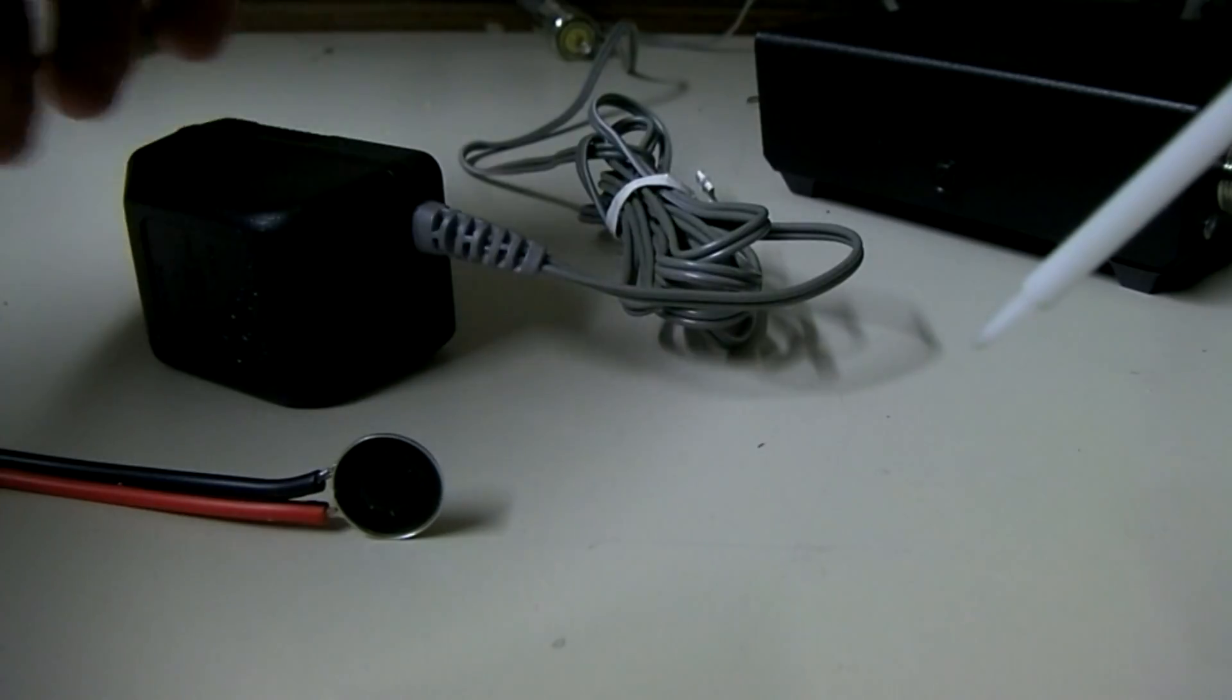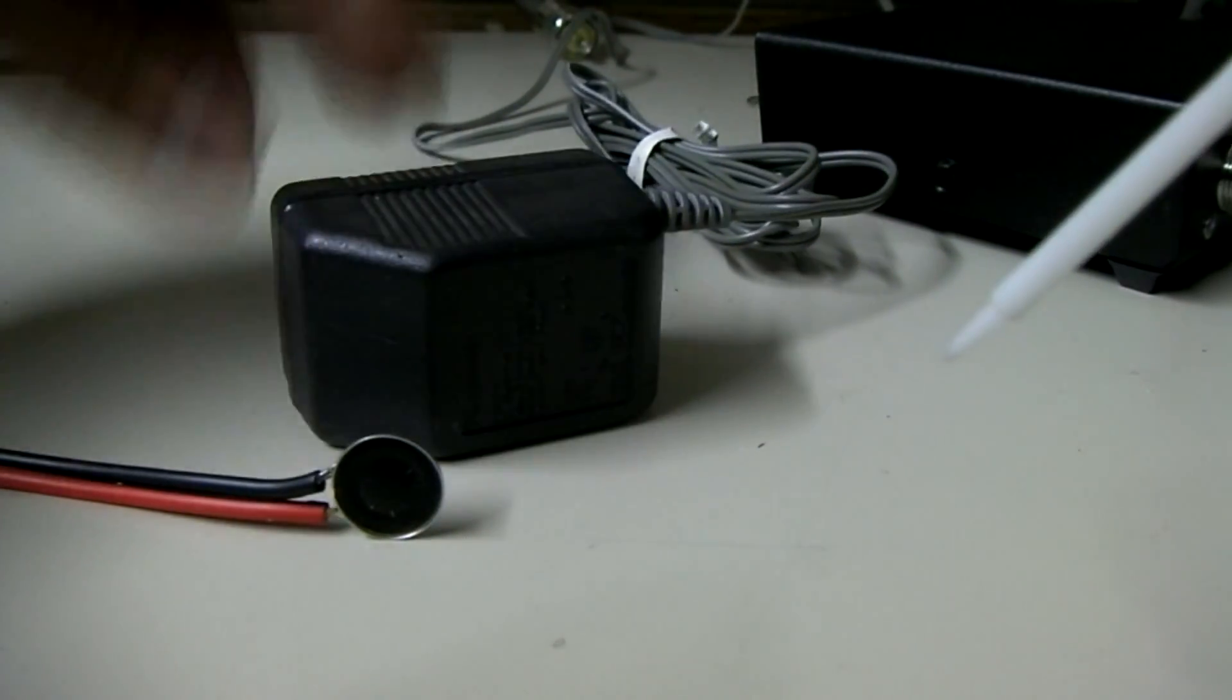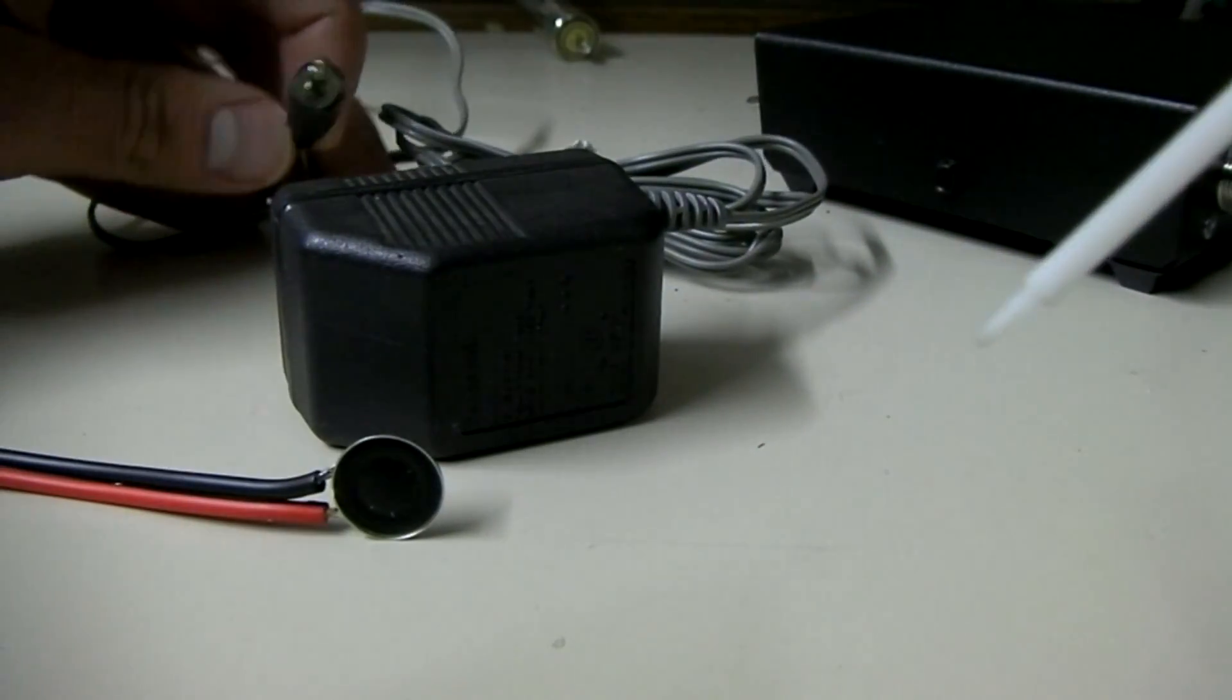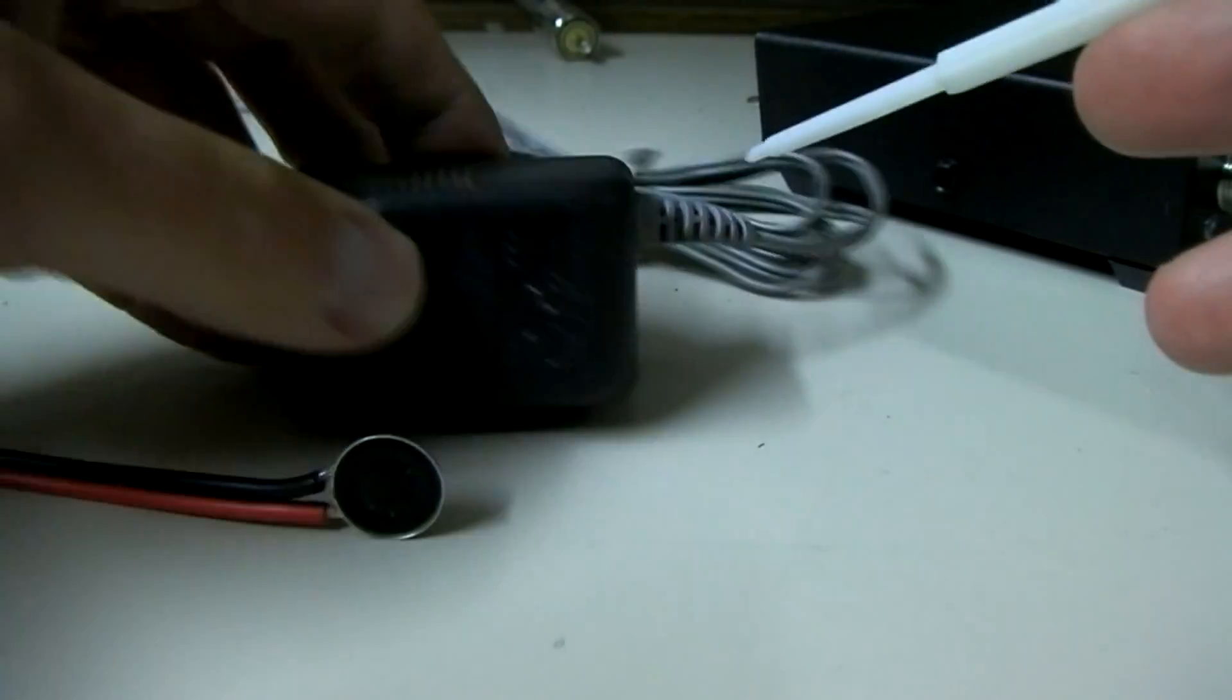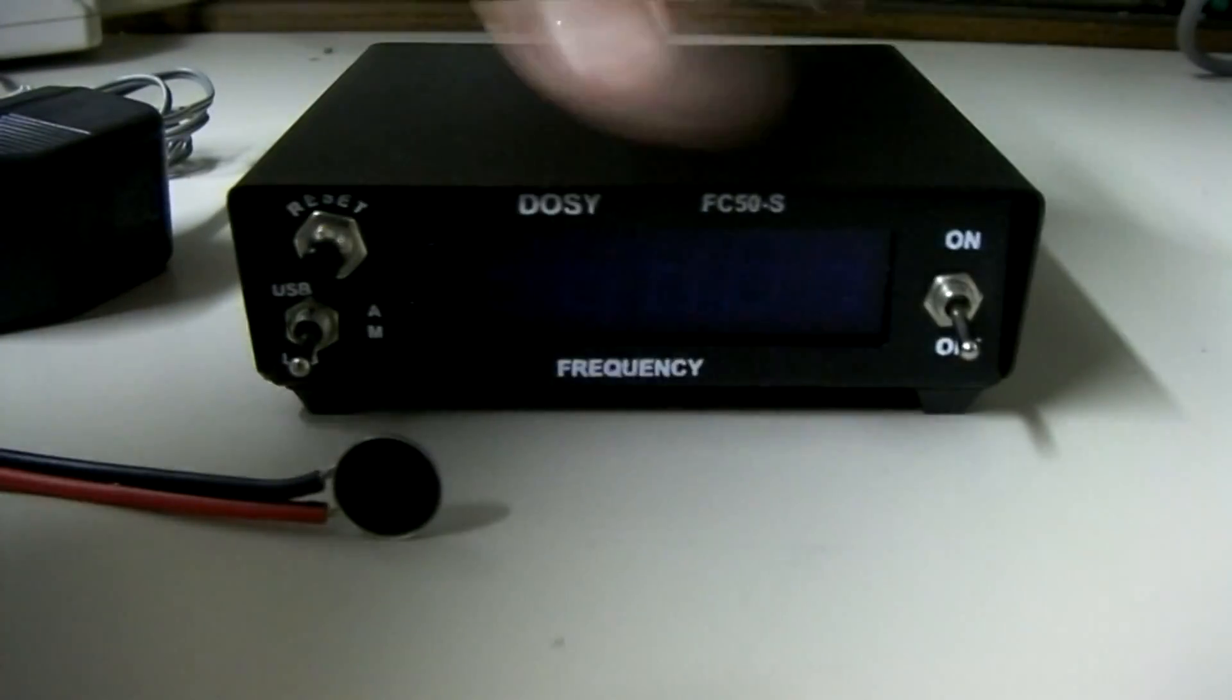Not a whole lot going on. On the back side there, there is a small wall wart. So this is meant to be used inside. But this is your wall wart AC to DC power supply that comes with the frequency counter. It's quite small. As you can see, compact, so it doesn't take up a whole lot of room on your desk.